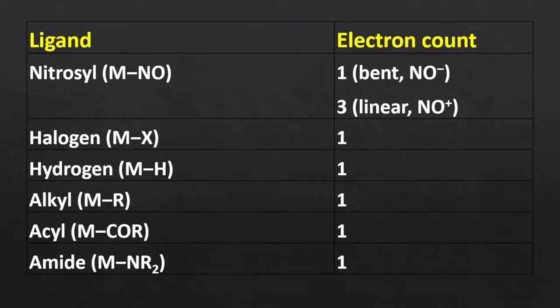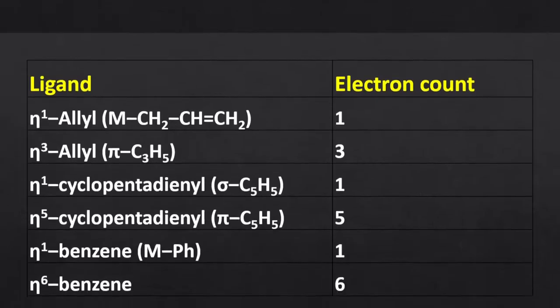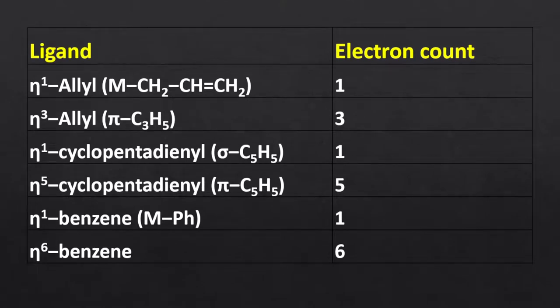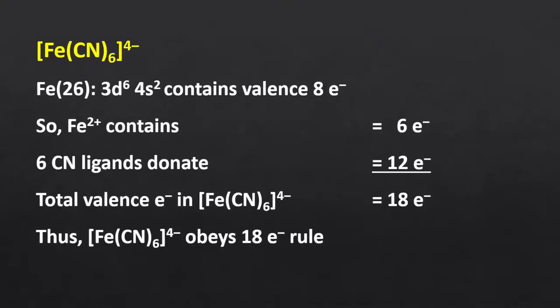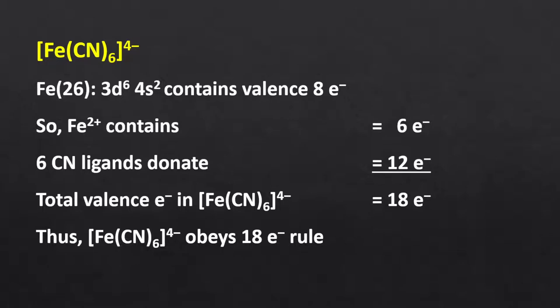Ligands such as halogen, hydrogen, alkyl, acyl, and amide use sigma electrons only during bond formation with the metal — thus they are 1 electron donors. Allyl, cyclopentadienyl, and benzene can be single or multi-electron donors depending on whether the delocalized electrons of the cyclic ring are involved in bond formation with the metal. Now let me illustrate some more examples.